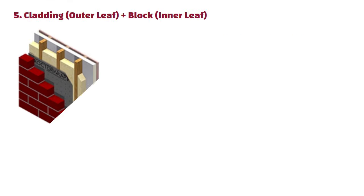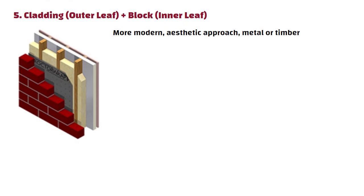Cladding plus block: For a more modern aesthetic approach, metal or timber cladding can be used as the outer leaf. This combination is often seen in commercial or industrial buildings.